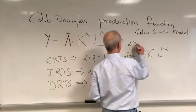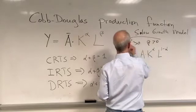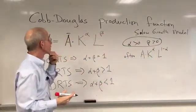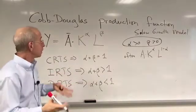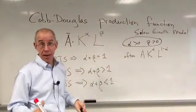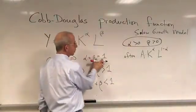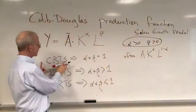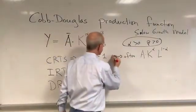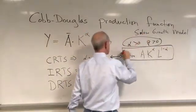And I should say that alpha and beta are both typically positive, so that ensures that if you add more labor or add more capital, you actually get more output.